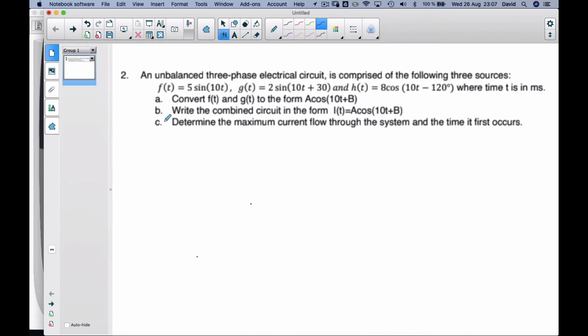For this problem we're going to consider three unbalanced phase shift electrical circuits from these three sources. Time is in milliseconds. I want to convert f and g to cosine curves.